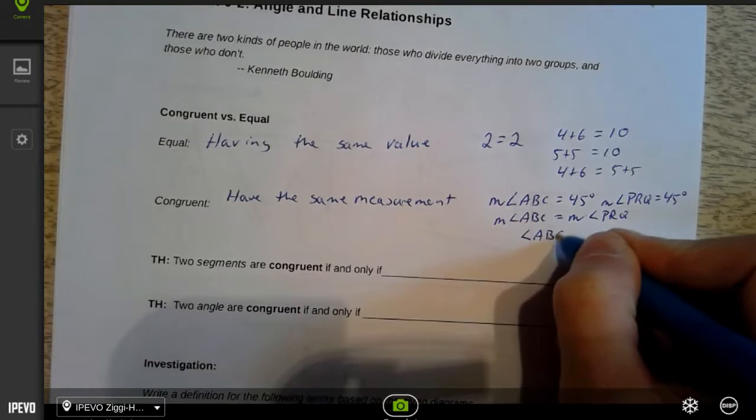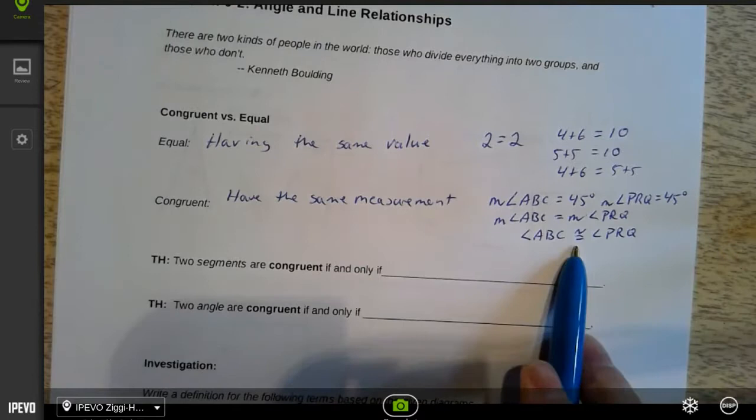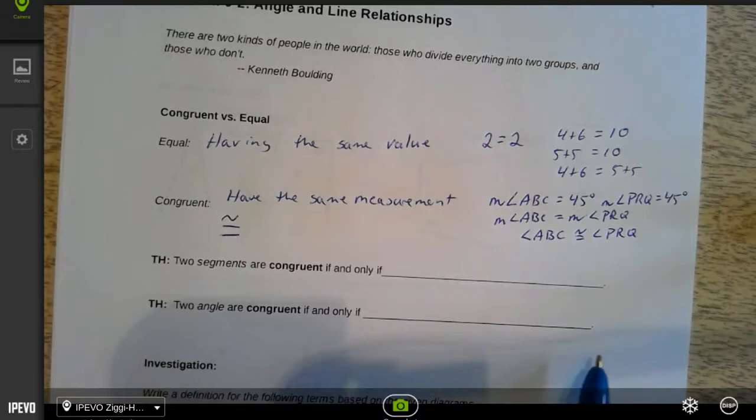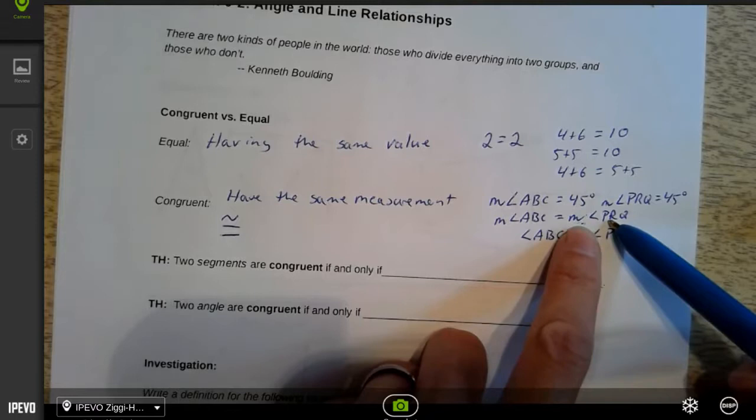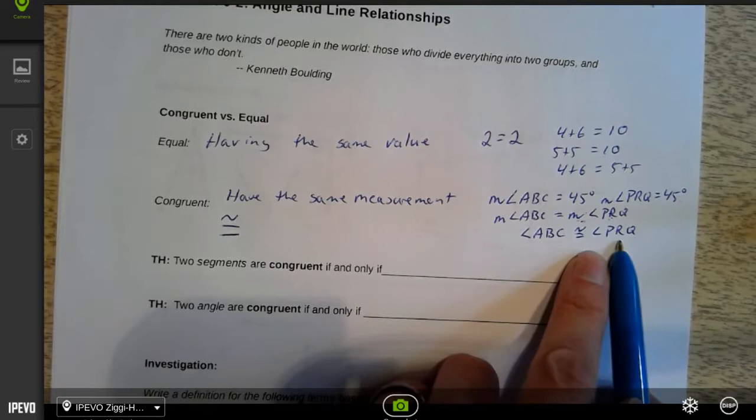And this is our symbol for congruent. It looks like an equal sign but it's got that little thing over top of it as well. So the difference is measurements - this represents a number. But when we don't have the measurement, we're talking about a figure, and figures don't have value. Just like my brothers don't have value - they have plenty of value, but they don't equal a value, a measurement.